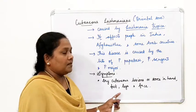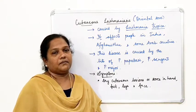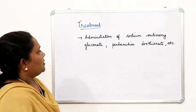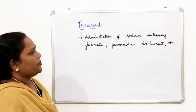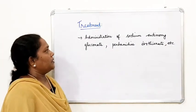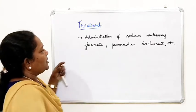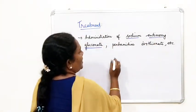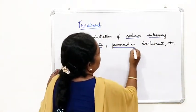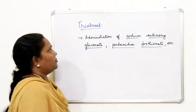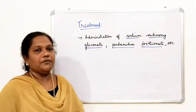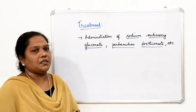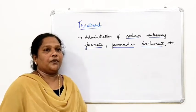For the treatment of Kala Azar, sodium antimony gluconate and pentamidine isothionate can be administered. These drugs are used in the management of this disease.